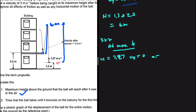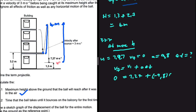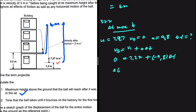We have acceleration 9.8 meters per second squared and we're looking for delta t. Using the equation vf equals vi plus a delta t: 0 equals 7.27 plus negative 9.8 multiplied by delta t. Making delta t the subject gives us negative 7.27 divided by negative 9.8, which equals 0.742 seconds. That is the time it takes the ball to reach maximum height.